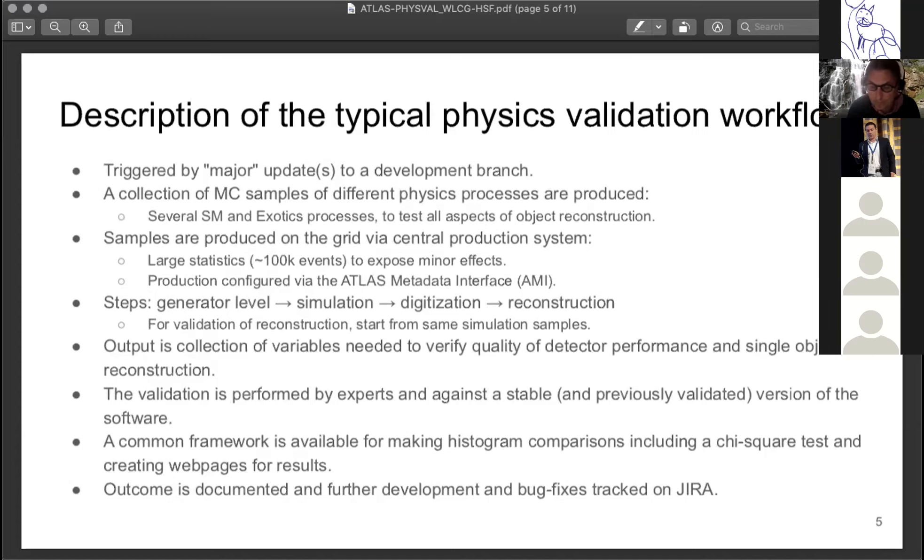The samples are run on the grid via our central production system and configured via the ATLAS metadata interface. There are different steps of this chain according to what we are validating. Typically we go from generator level to simulation, digitization, and reconstruction. The output is typically a collection of variables that can help us verify the quality of object reconstruction, sometimes extended to physics analysis. We have an output of histograms or efficiency plots, and we do have a common framework to produce comparisons and some measure of agreement of distributions.